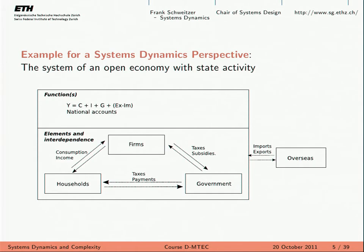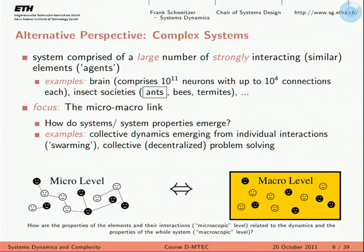This is the systems dynamics perspective. There is a different perspective — the so-called complex systems perspective. What is a complex system? Every time you have a system which consists of very many elements, incredibly many elements, and they are so interconnected that you also have very many interconnections, then you can call this a complex system because it's very hard to analyze all the interdependencies within that system.